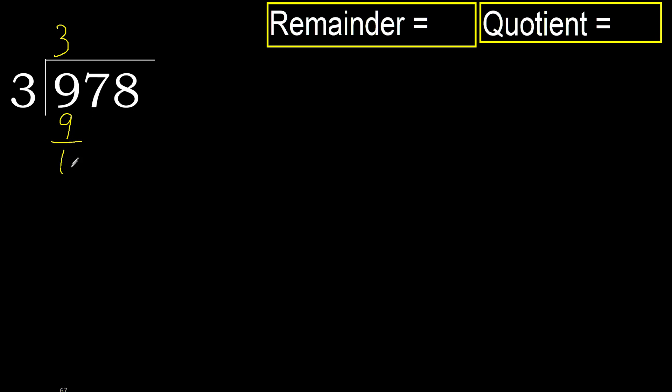Subtract. Next. Eliminate 0. The next digit is 7.